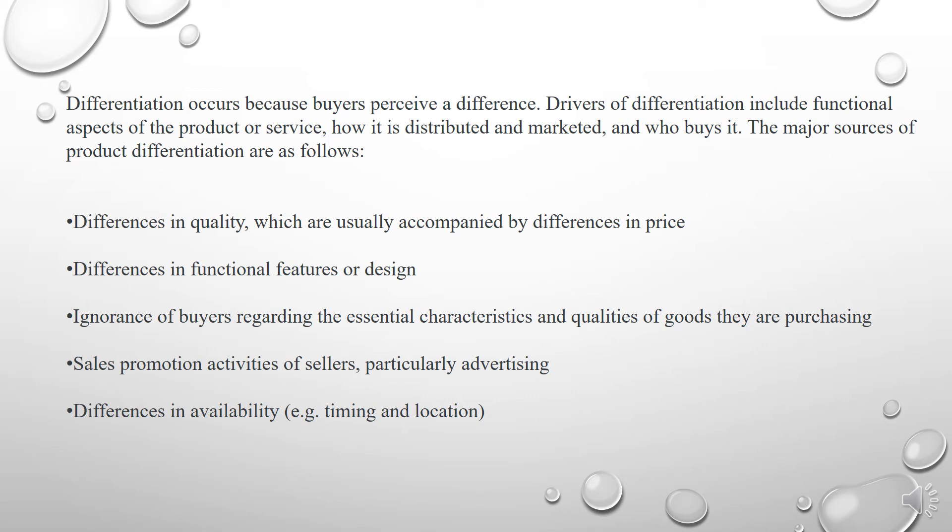The major sources of product differentiation are as follows: differences in quality, which are usually accompanied by differences in price; differences in functional features or design; ignorance of buyers regarding the essential characteristics and qualities of goods they are purchasing; sales promotion activities of sellers, particularly advertising; and differences in availability, for example time and location.